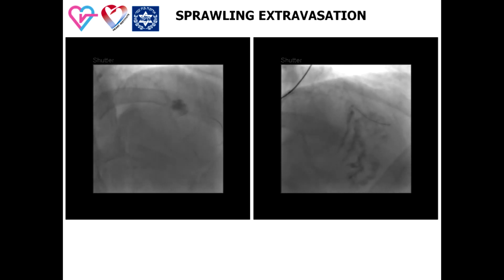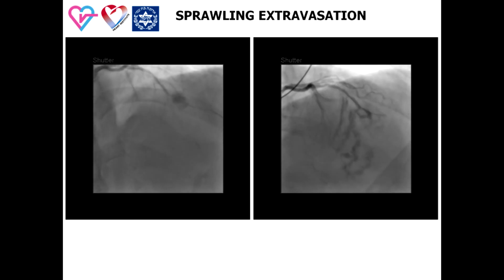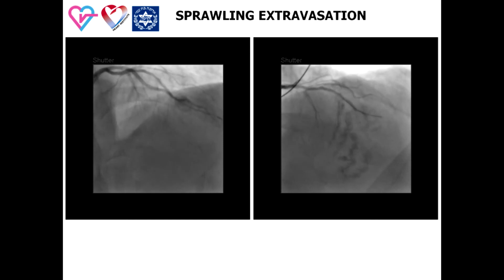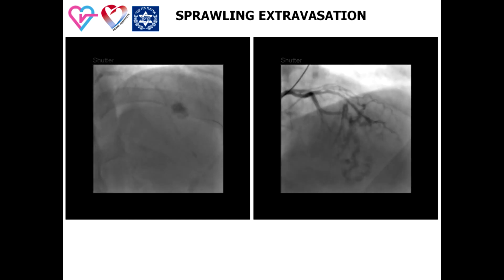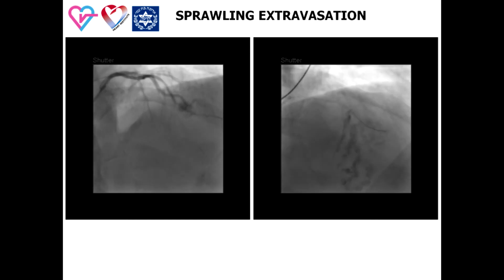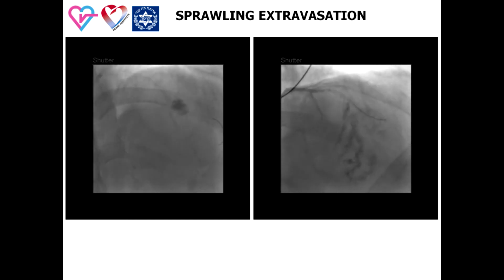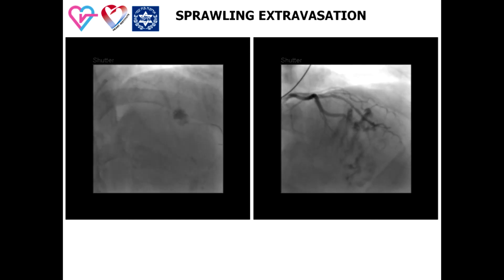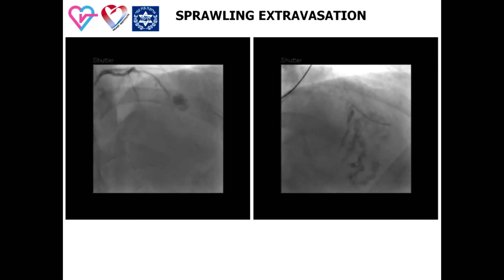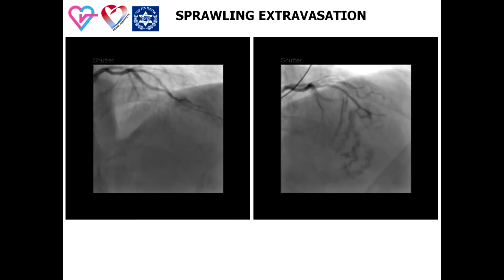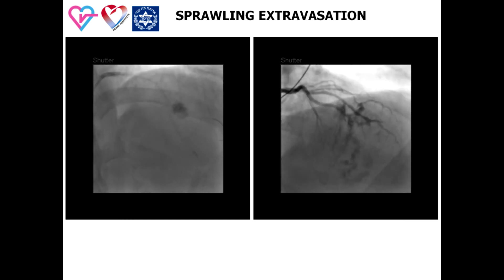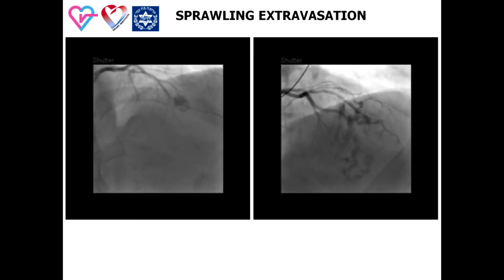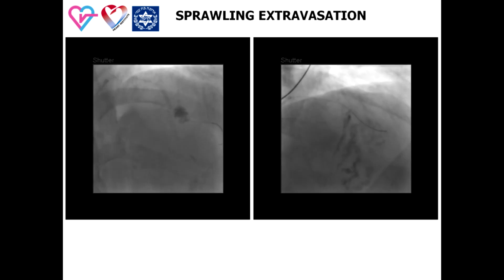This PCI was complicated by coronary perforation presenting as a quickly sprawling intramural hematoma extending towards the epicardium with development of pericardial leakage.